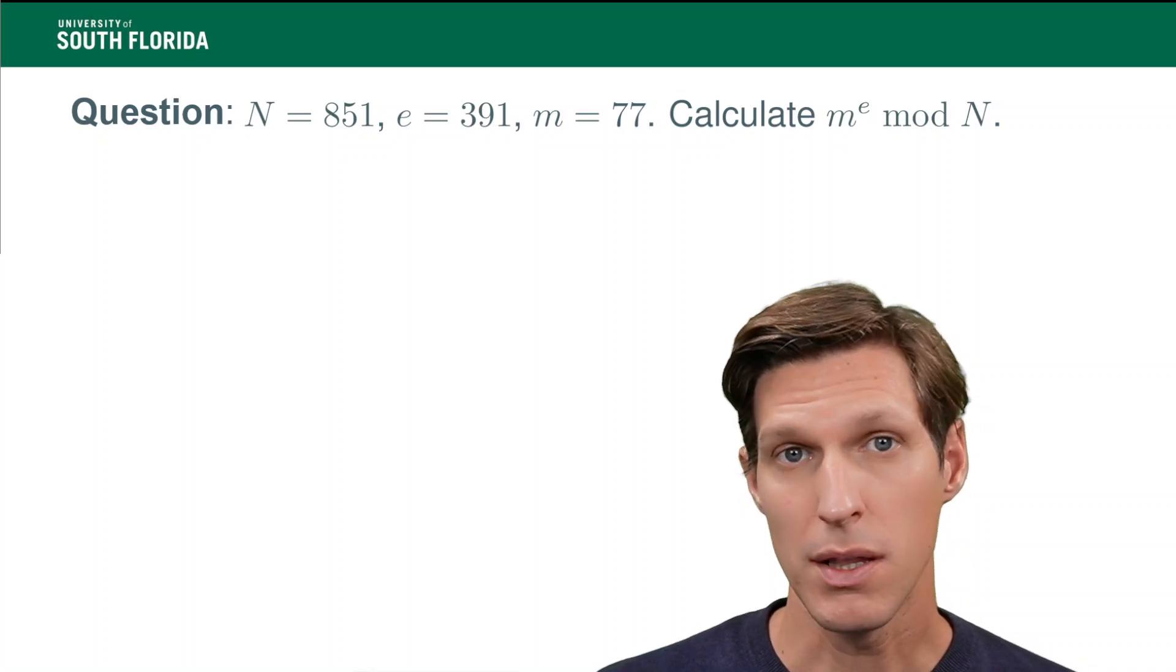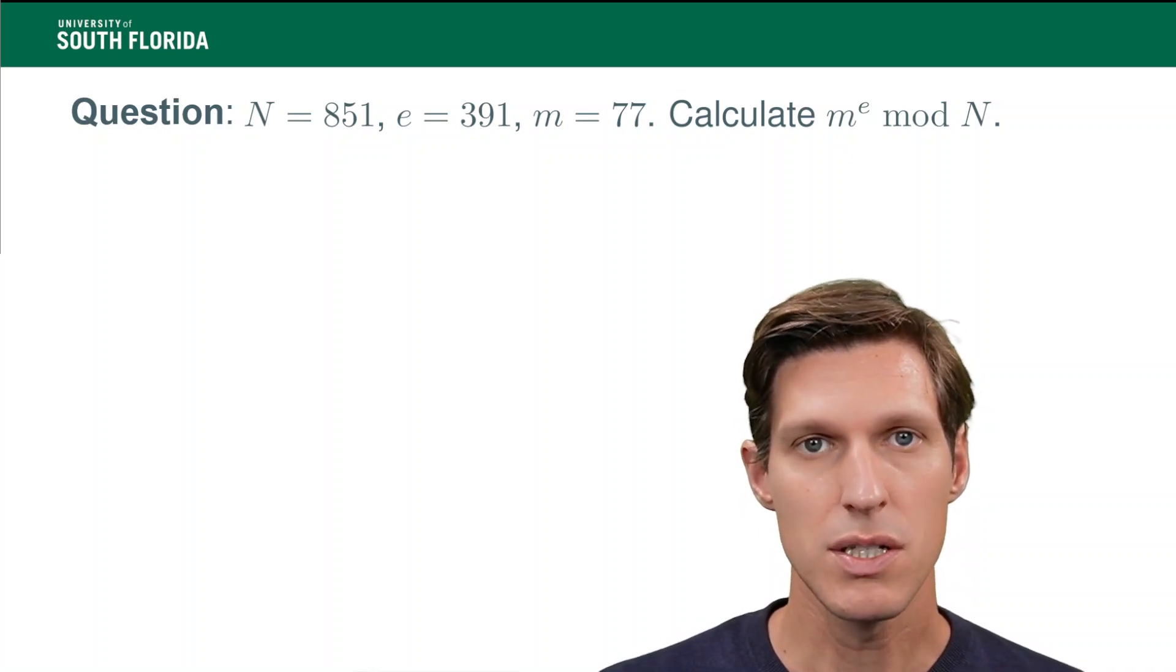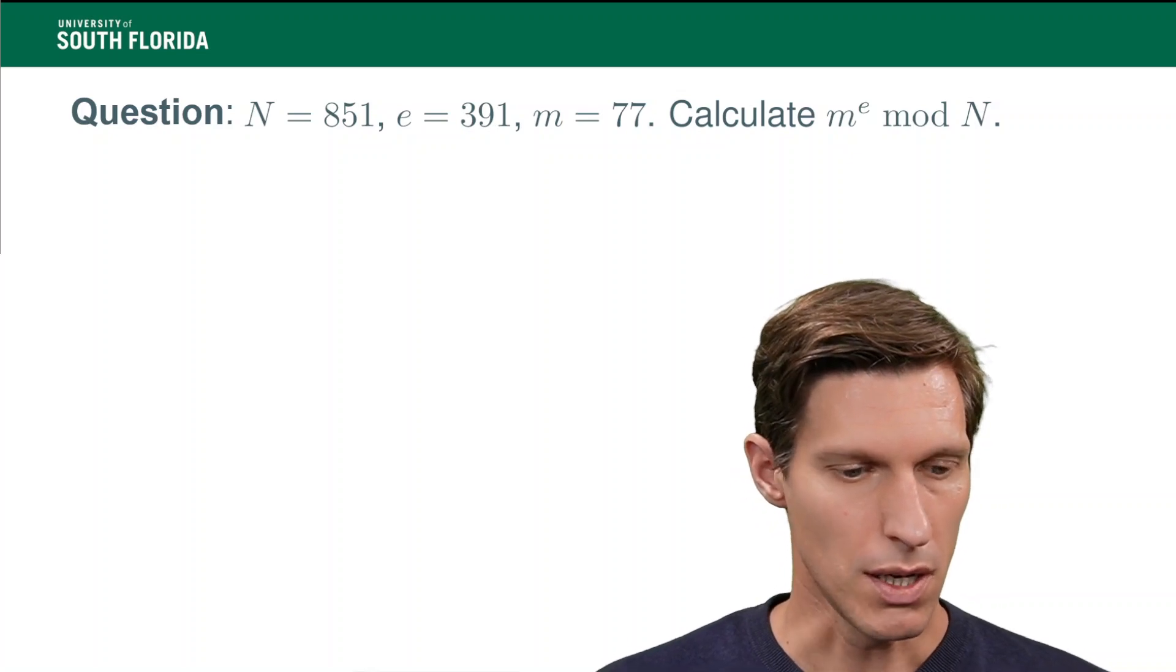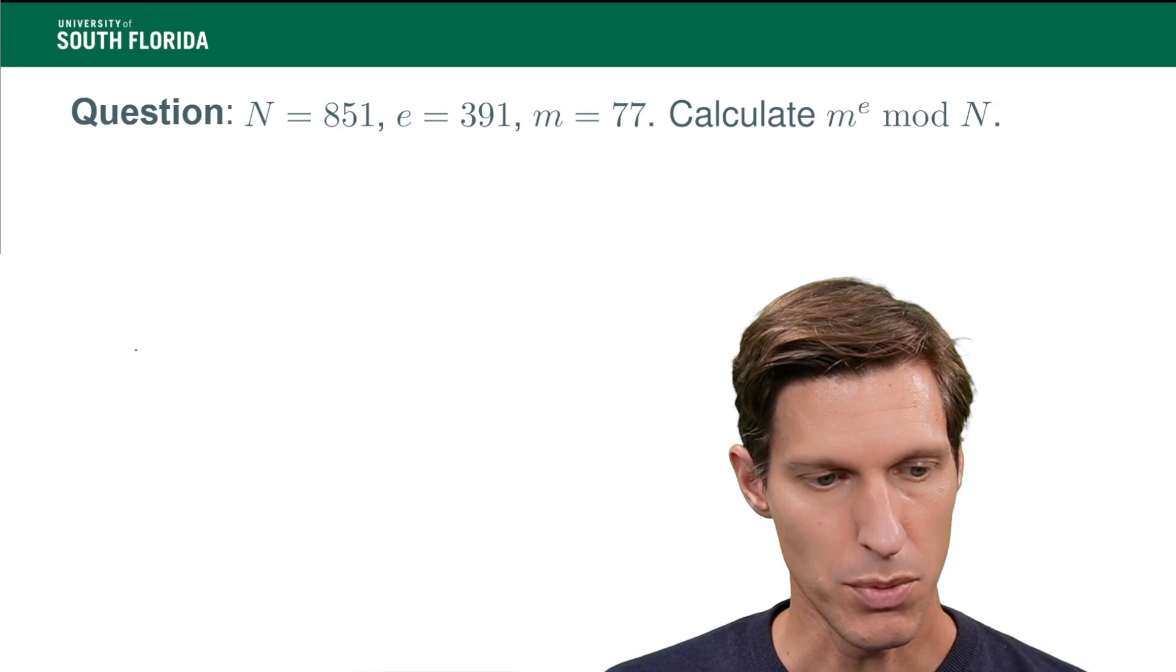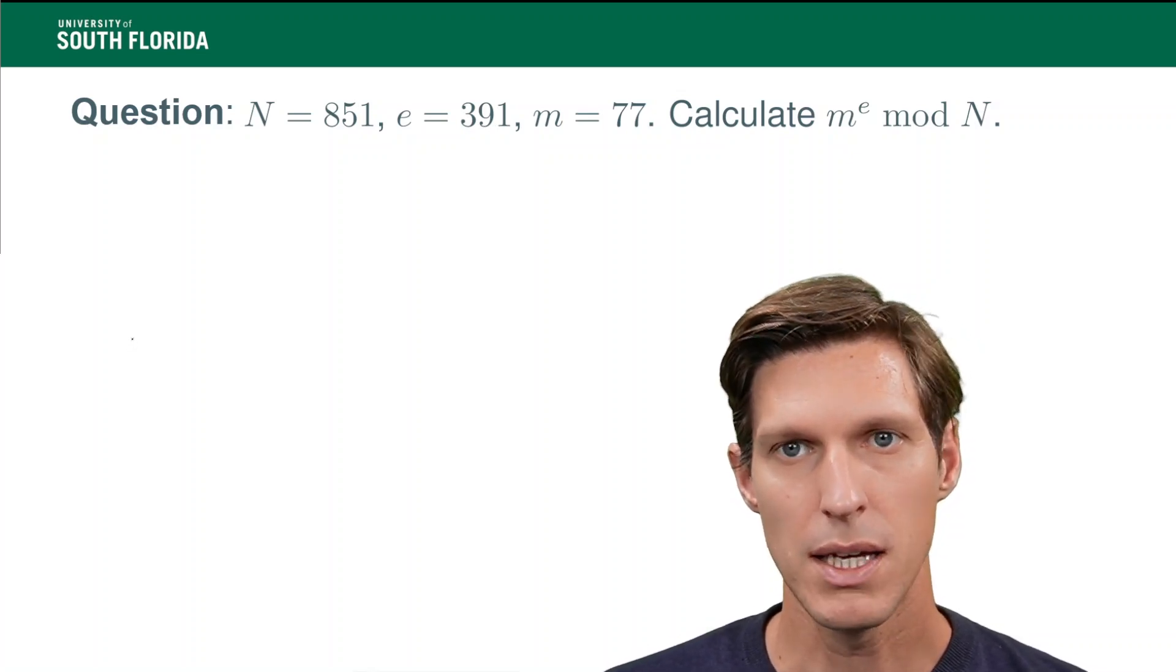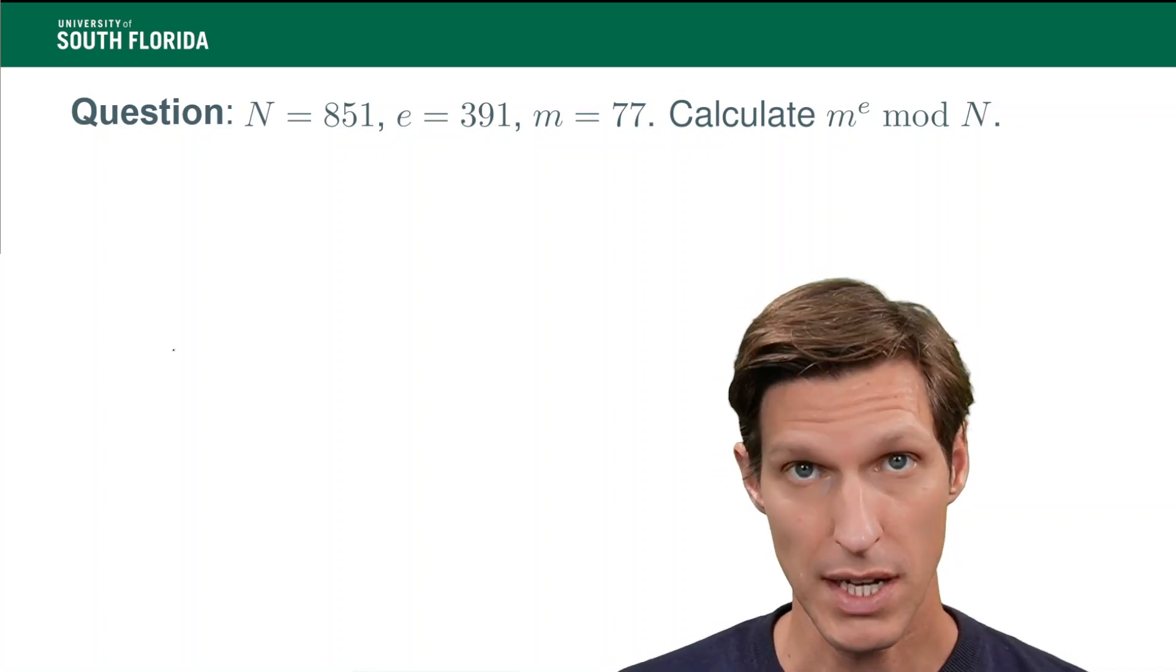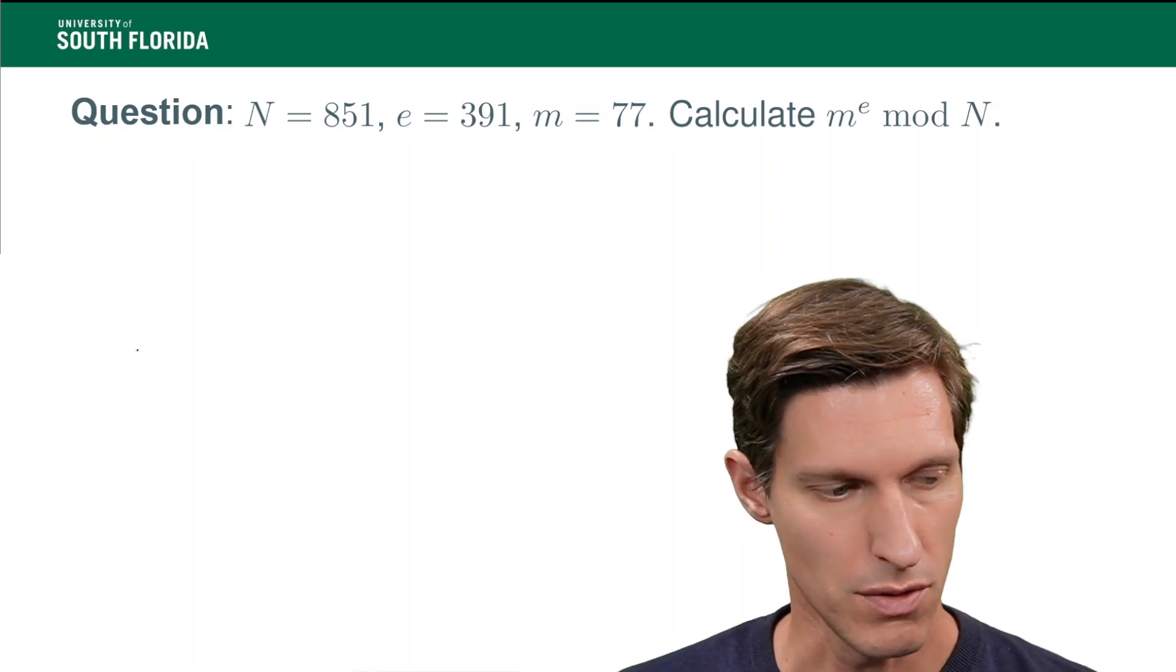Now, guess what? The first step of this binary exponentiation consists in the decomposition of exponent e in binary. So, if that's not completely natural to you, here is one method to decompose e by hand in binary, and it consists in dividing it by two, and taking until the quotient, successively, until the quotient is zero, and then taking the sequence of remainders.